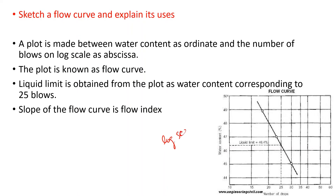Moving to Atterberg limits, we plot water content on the y-axis and number of blows on the x-axis to get the flow curve. This is the Casagrande flow curve. At 25 blows, we read the water content — this is the liquid limit. The slope of the flow curve represents the flow index.